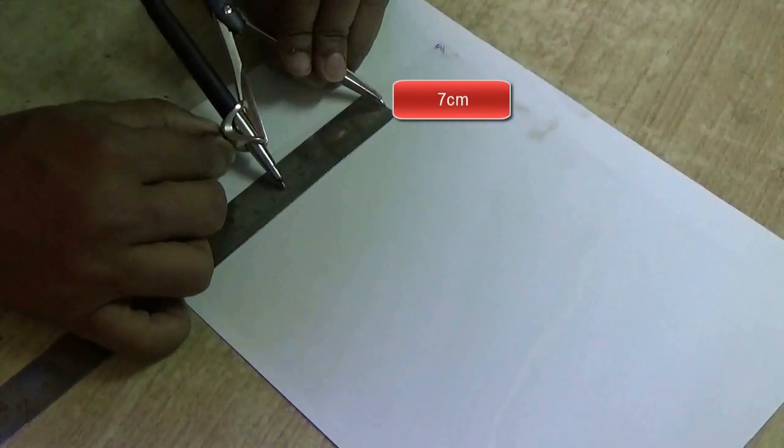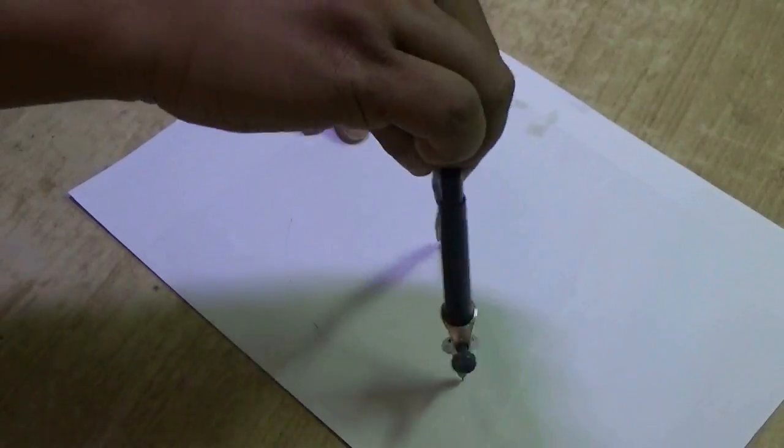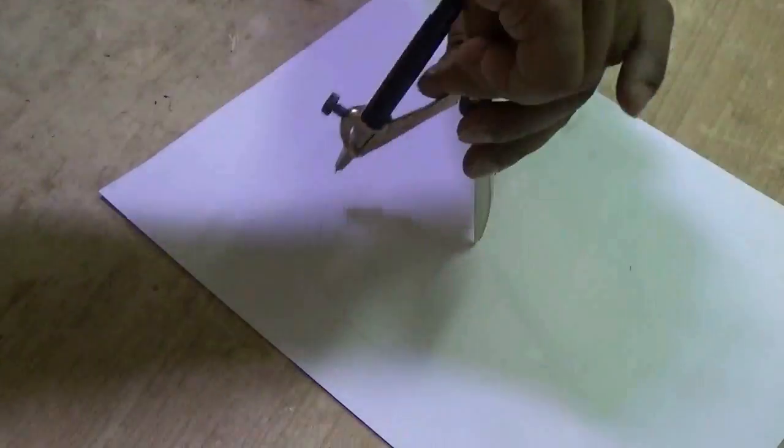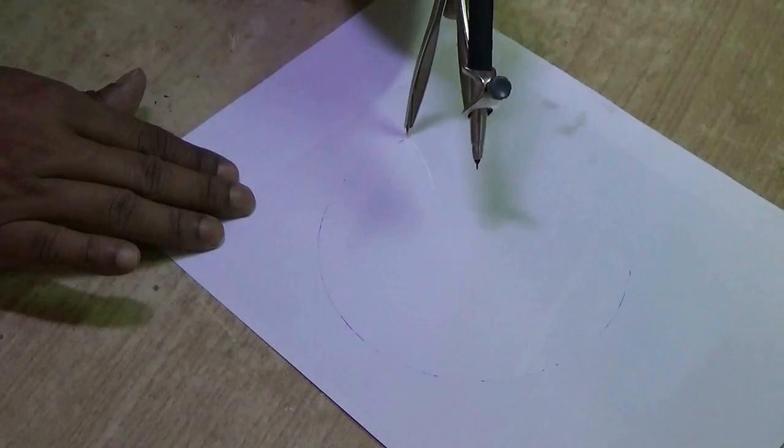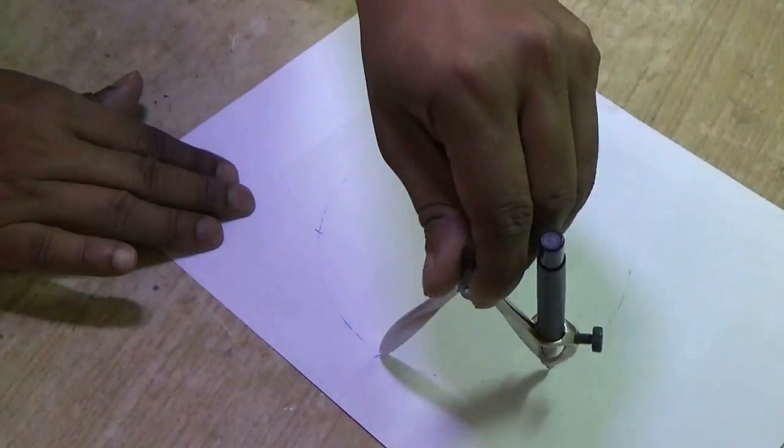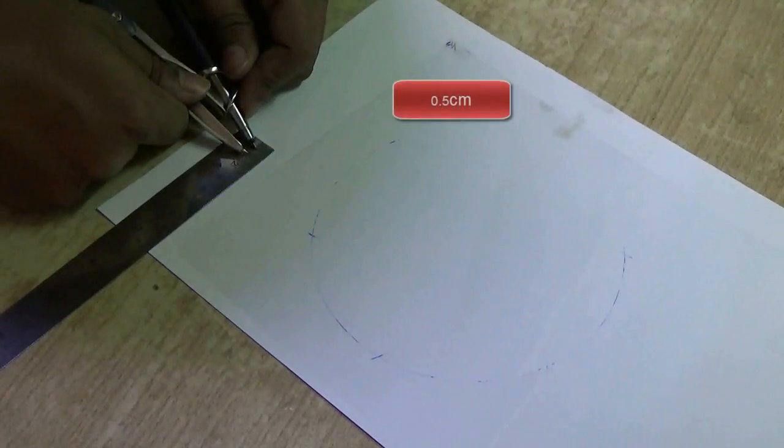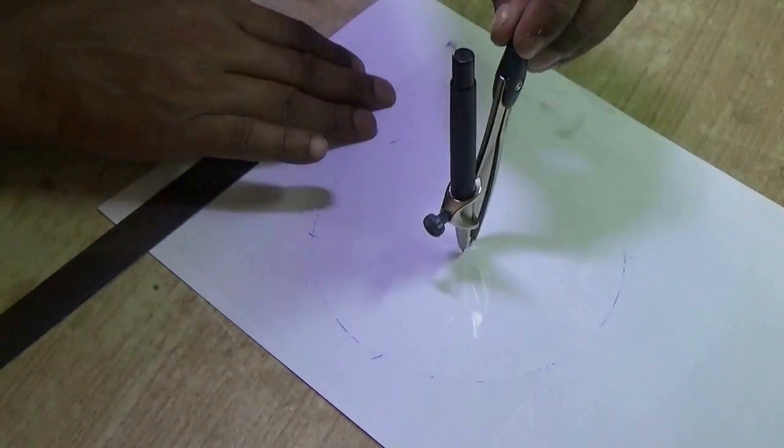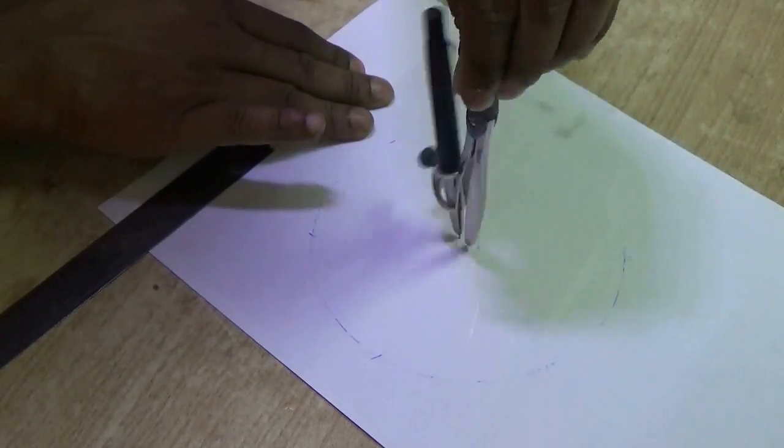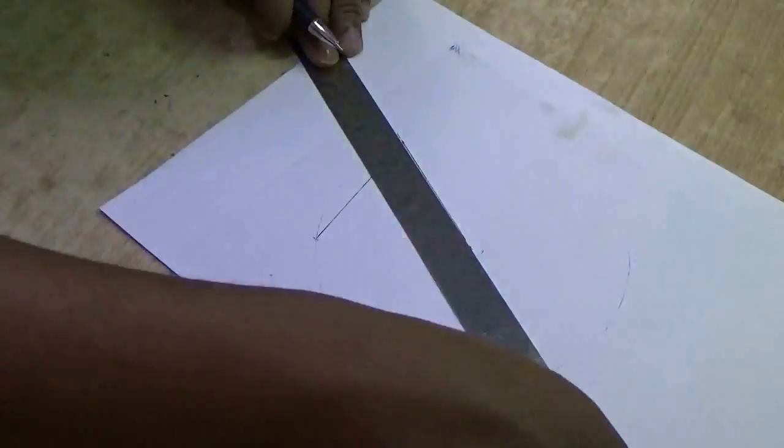Now take seven centimeter length and mark those points. Now draw a 0.5 centimeter circle on the top. Now we are going to join those points as shown on the screen.